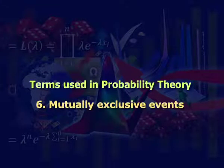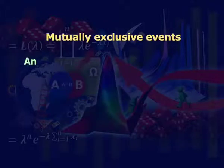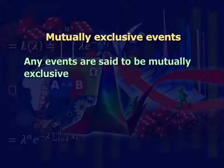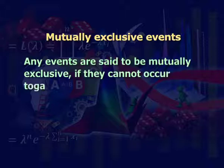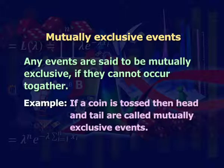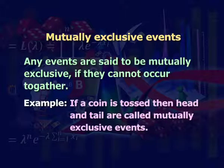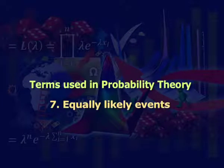Sixth: mutually exclusive events. Any events are said to be mutually exclusive if they cannot occur together. For example, if a coin is tossed, then head and tail are mutually exclusive events.